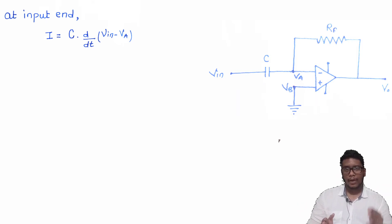VA is the summing point. And we know the value of VA is equals to the value of VB. The value of VB is zero. Why? The reason is, the value of VB is connected to the ground. So it is zero.